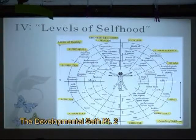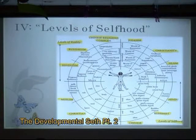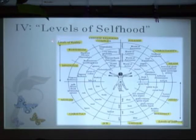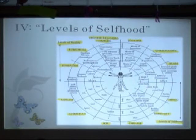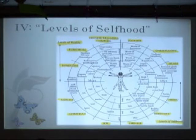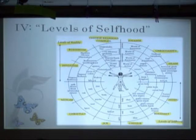Now moving on to the levels of selfhood. This is an interesting diagram. I would love to get the Seth material included on here, but our levels of reality are up here, so the frameworks are up there. The levels of selfhood are down here, so this is an axis that cuts it in half. We could almost fold that up to merge the levels of self and levels of reality because there's really no separation.